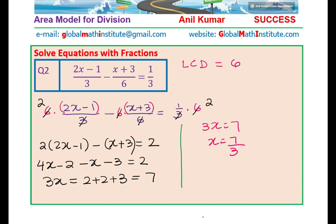To recap: we multiplied each term by the lowest common denominator 6, giving 2 times (2x minus 1) minus 1 times (x plus 3) equals 2. Once you open the bracket, it is important to see that the negative sign changes both signs. 4x minus x is 3x, and 2 plus 2 plus 3 is 7. Answers in fractional form like 7 over 3 are perfectly valid.